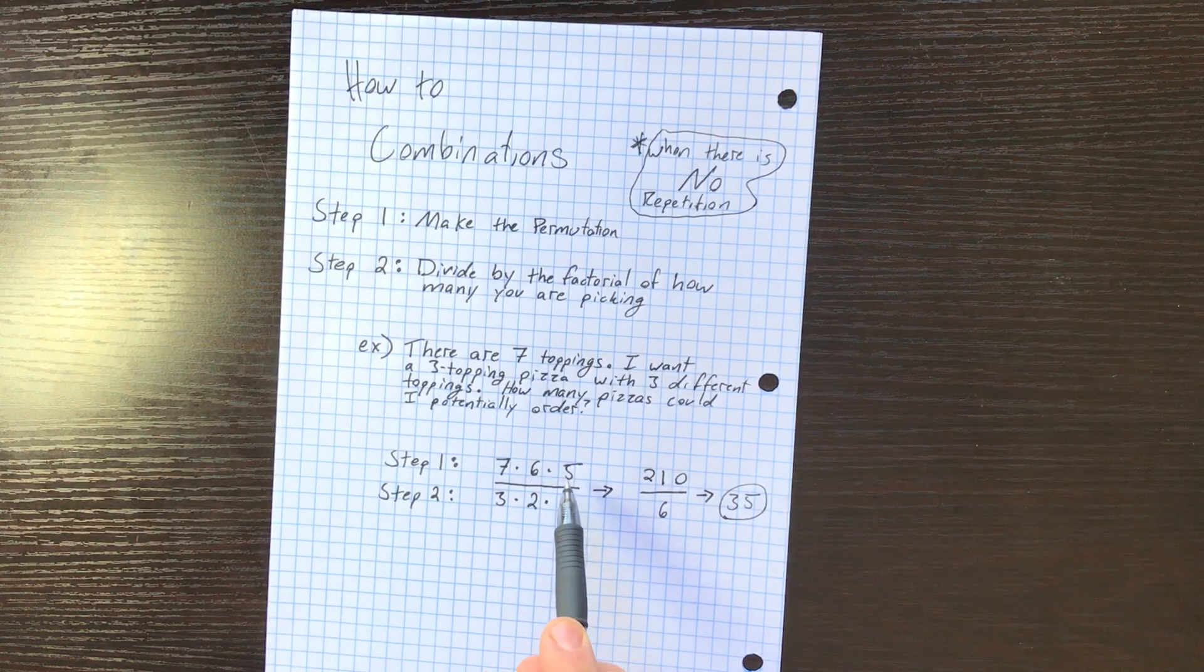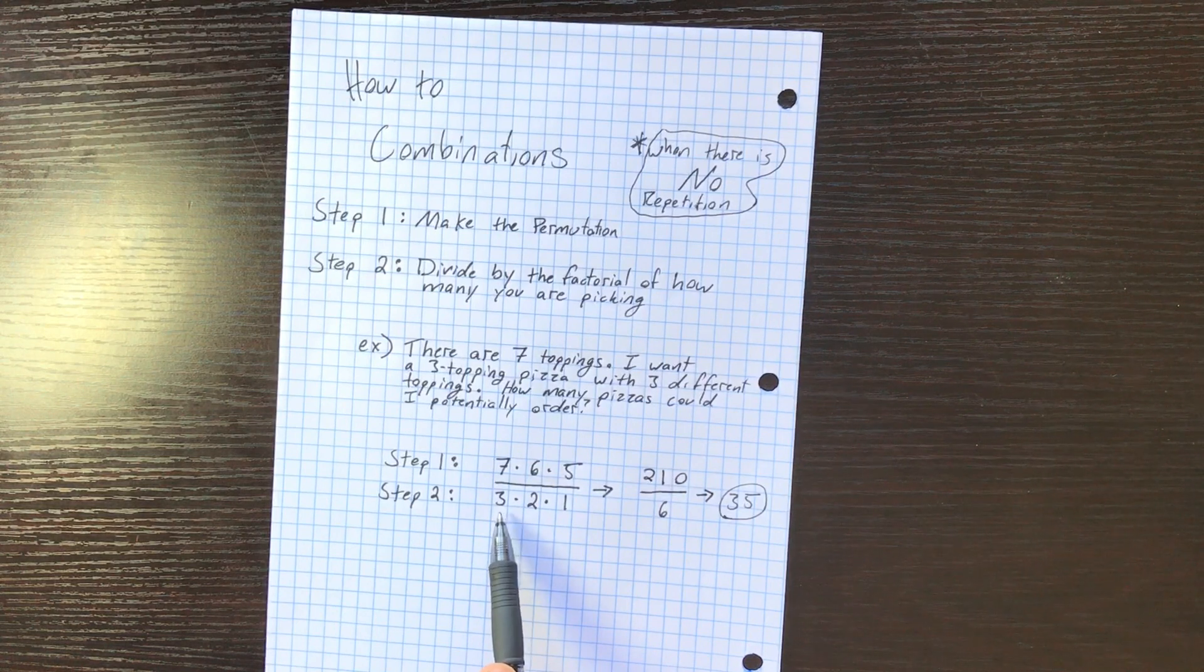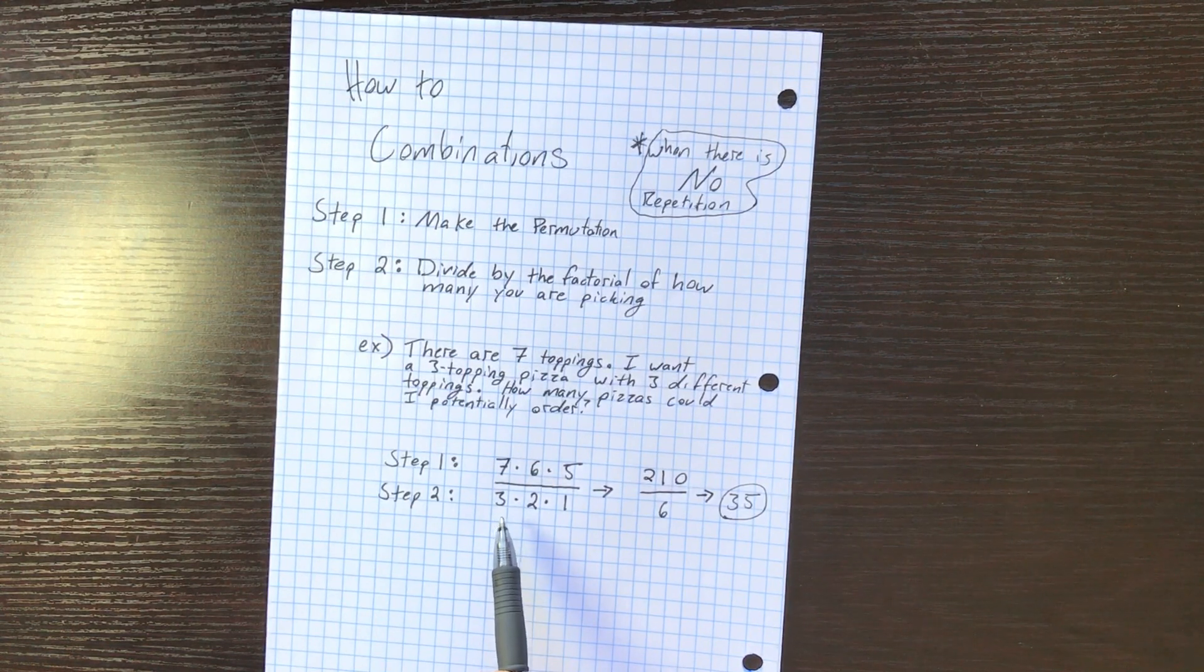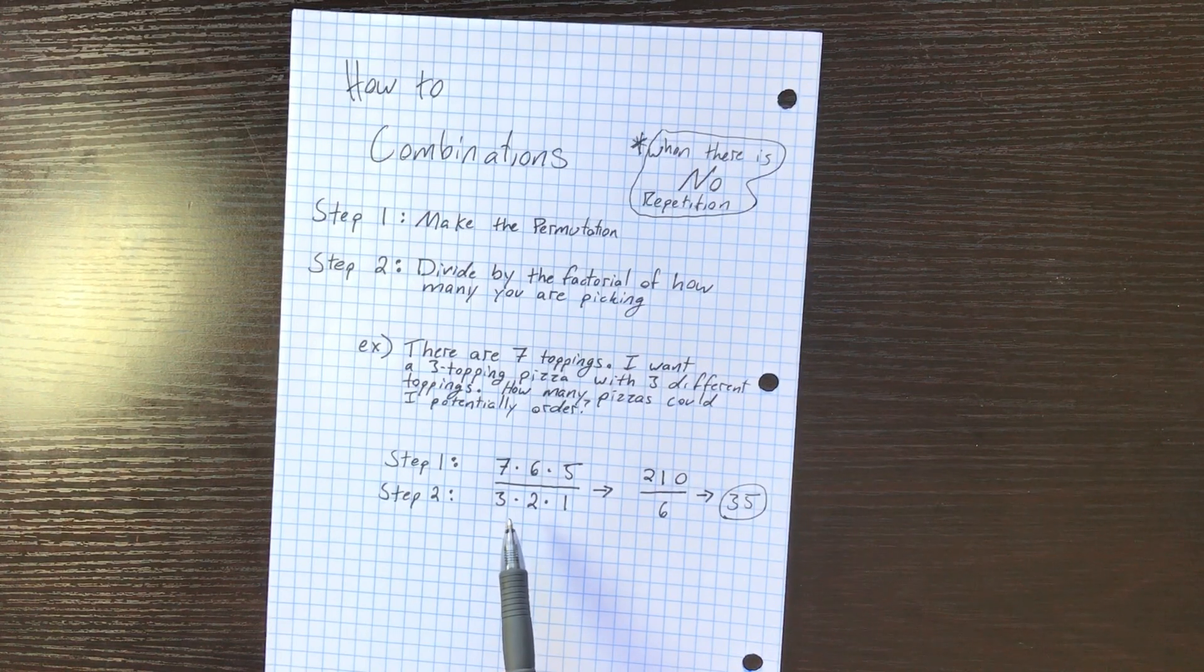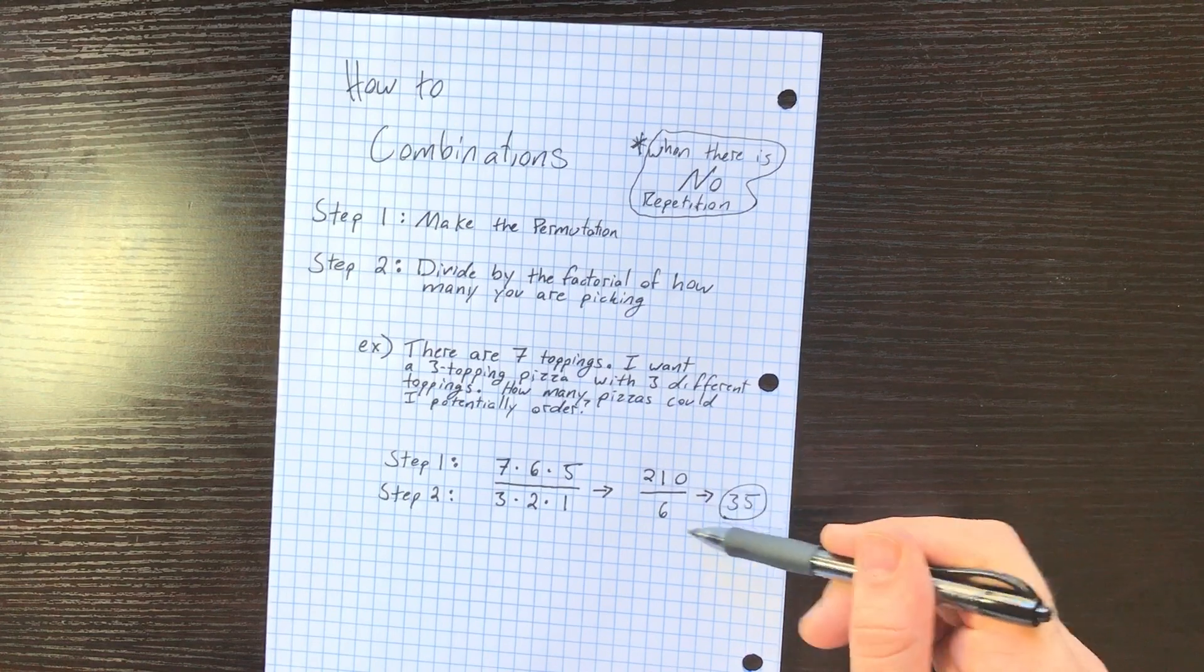We have 1, 2, 3 slots available. Once we pick our first topping, we have one less to choose from and one less to choose from. That's a normal permutation. Now we have to divide it by the factorial of how many items we're picking. So since we're picking three items, that's 3 factorial. Another way to say that is 3 × 2 × 1, and that's what that is down here.